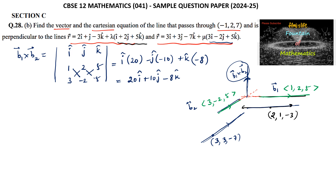So B1 cross B2 equals 20I + 10J - 8K. Or, taking 2 as a common factor, we get 2 times (10I + 5J - 4K).